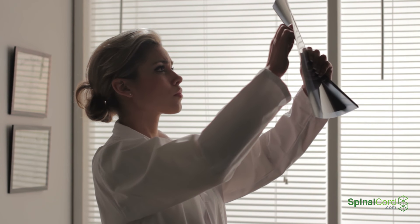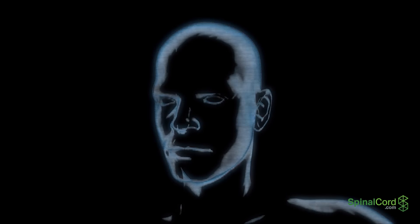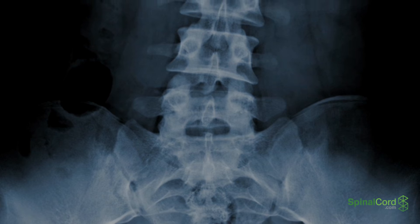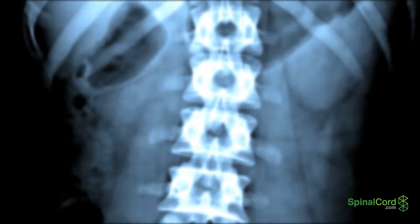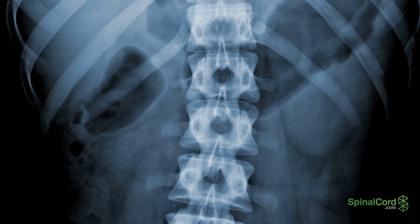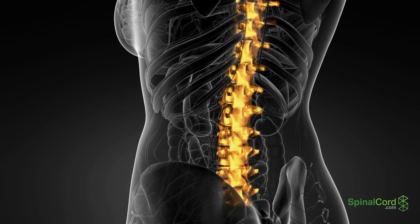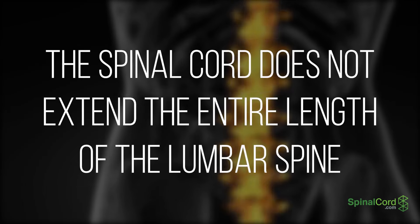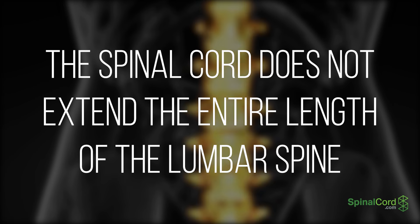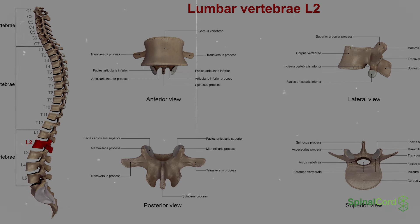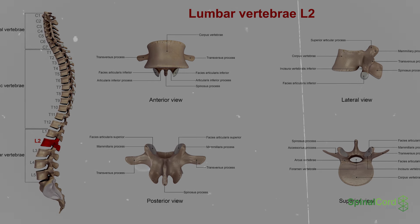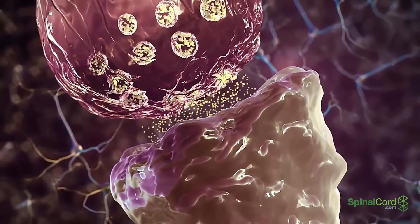Lumbar spinal cord damage may be complete or incomplete and may affect one or both sides of the body. As is the case with other spinal cord injuries, the completeness of spinal cord damage will determine how severe the injury and symptoms will be for the patient. It is also important to understand that the lumbar vertebrae are much different than the upper segments of the spine, because the spinal cord does not extend the entire length of the lumbar spine. L2 is the lowest vertebral section that contains spinal cord tissue.